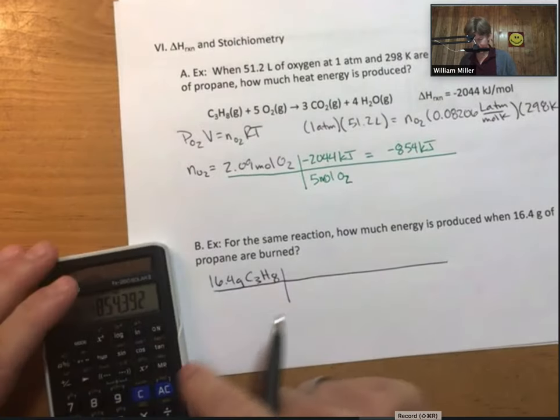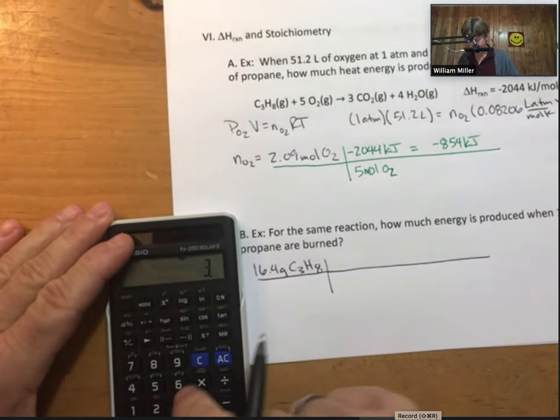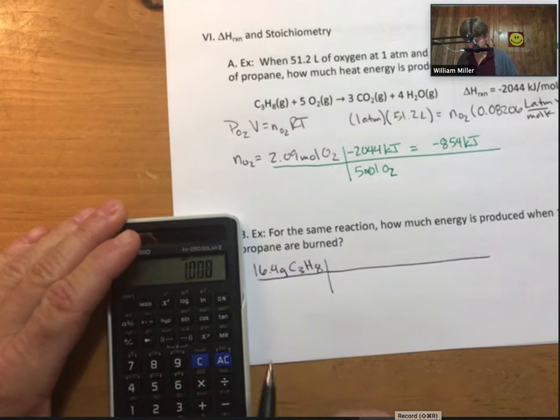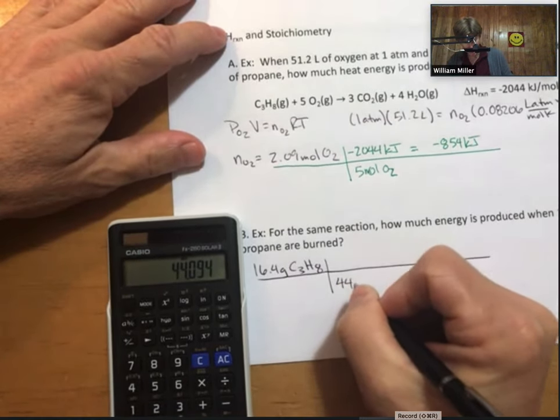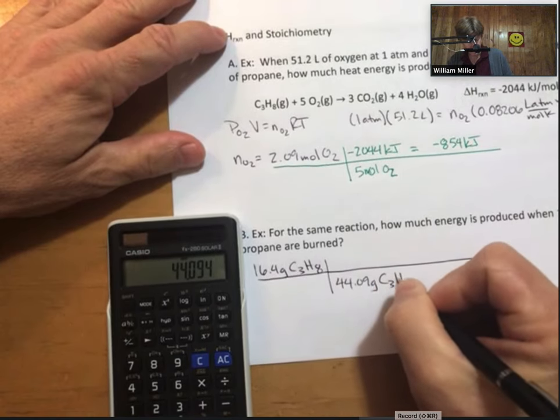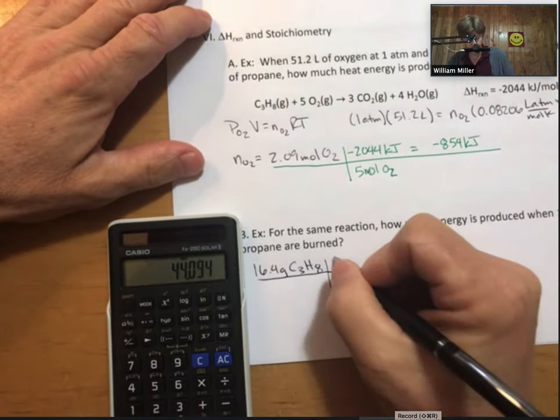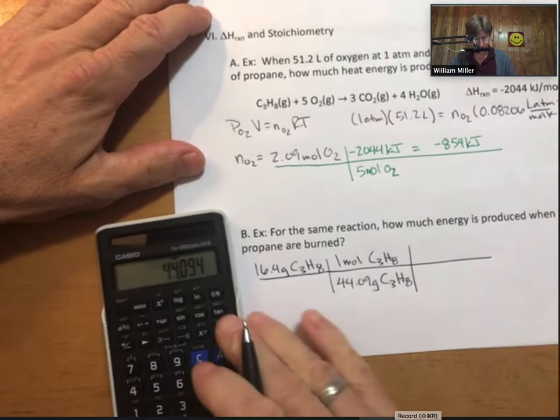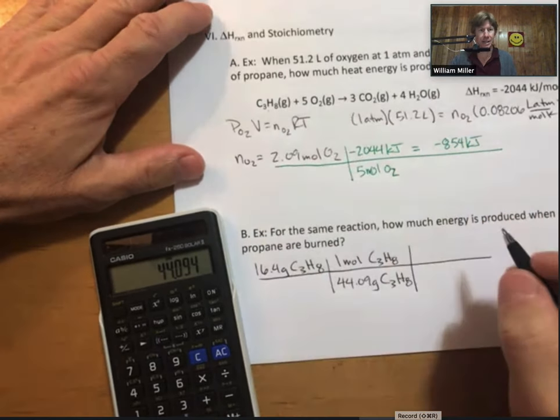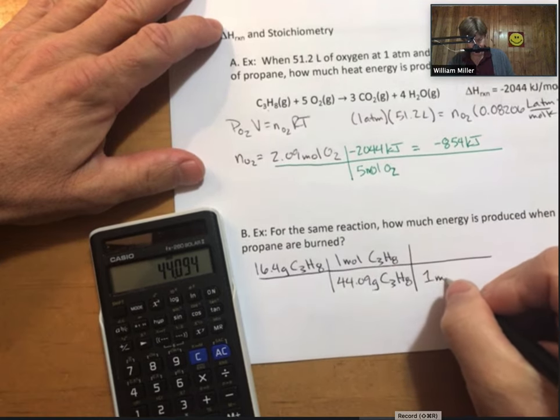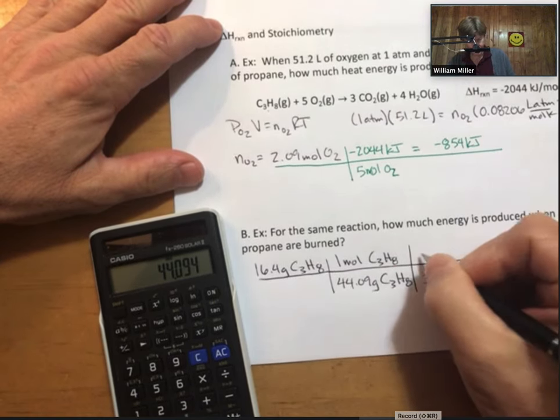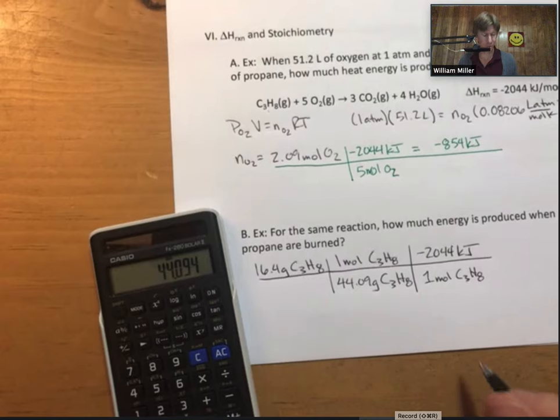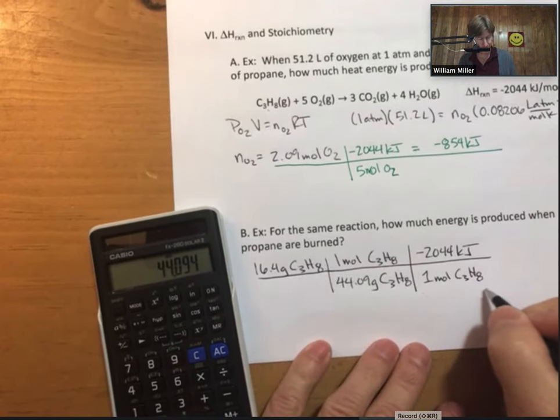I think we'll need a longer picket fence for this one. So propane, its molar mass, 3 times the molar mass of carbon plus 8, we get 44.09 grams of propane per one mole. And for every one mole of propane, and that is the coefficient, 2,044 kilojoules are produced. That's why it's negative.